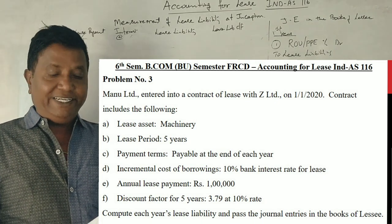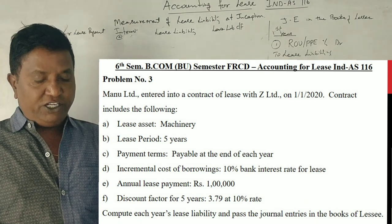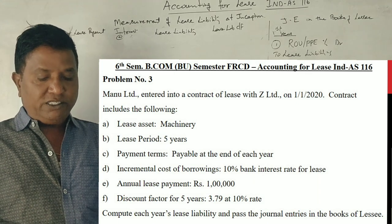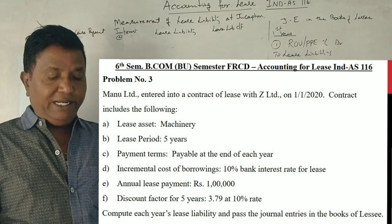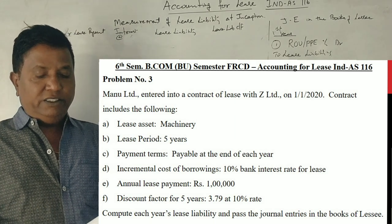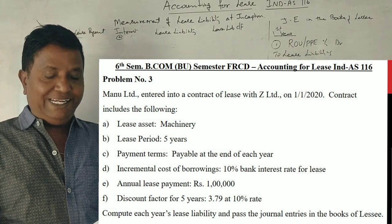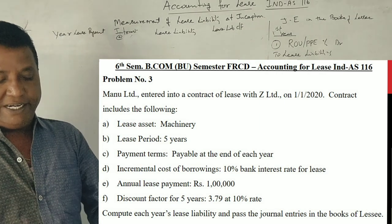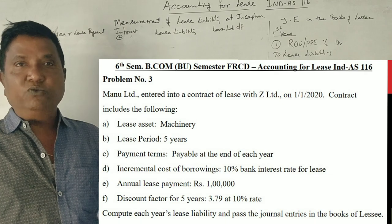Lease asset is machinery. Lease period 5 years. Payment terms payable at the end of each year. Incremental cost of borrowing 10% bank interest rate for lease. Annual lease payment is 1 lakh. Discount factor for 5 years 3.79 at 10% rate. Compute each year's lease liability and pass the journal entries in the books of lessee at inception according to IND AS 116.